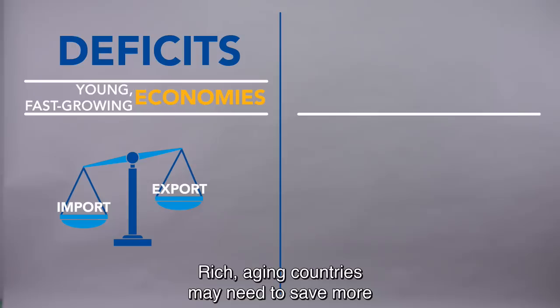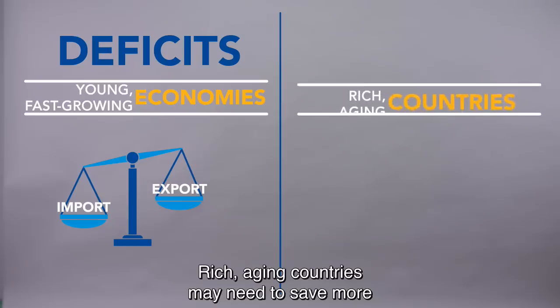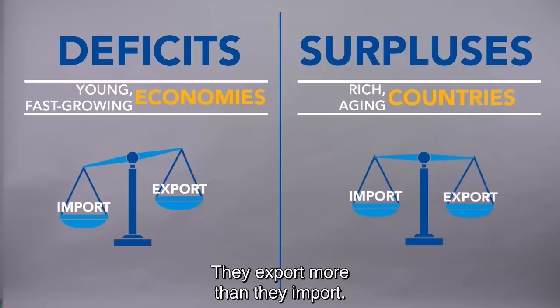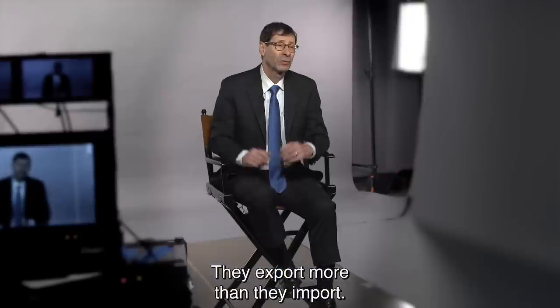Rich aging countries may need to save more to prepare for when workers retire, so they run surpluses — they export more than they import.